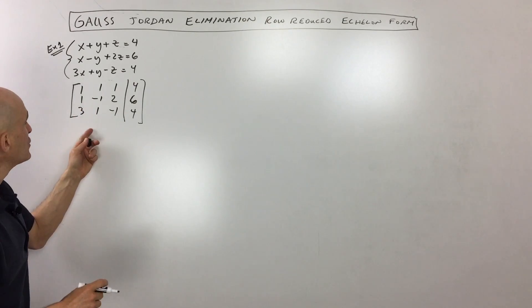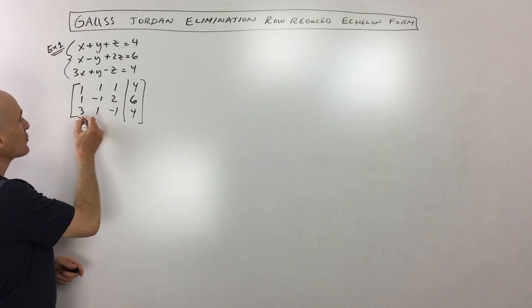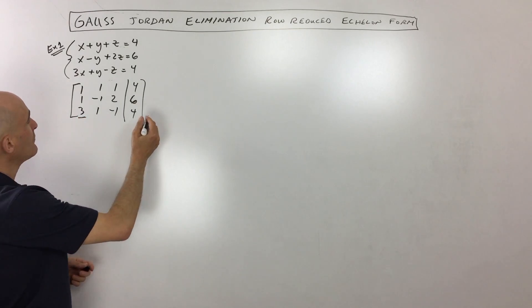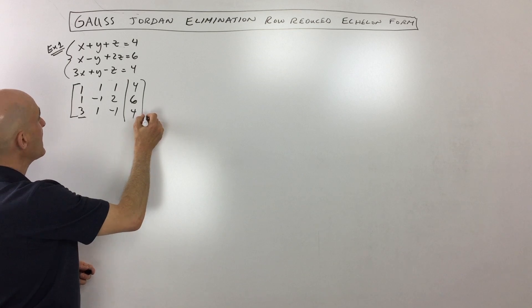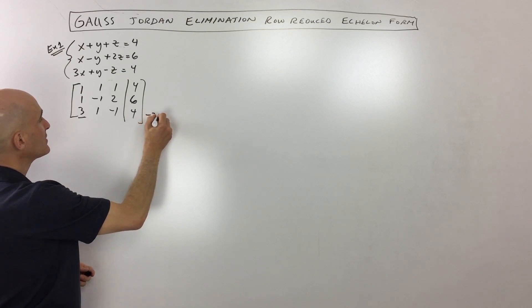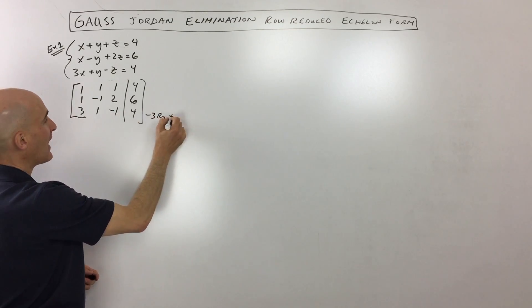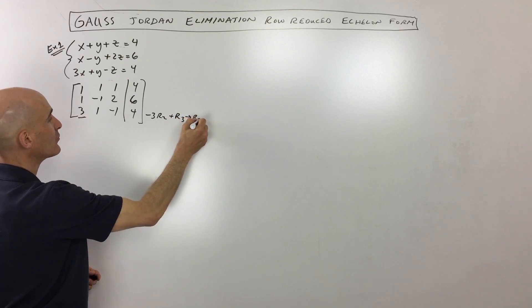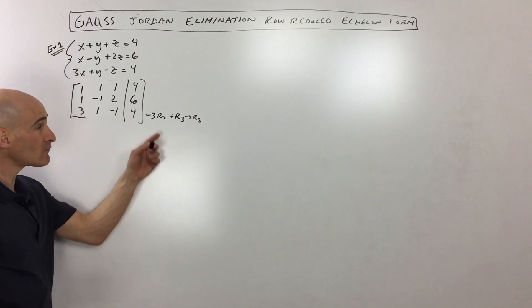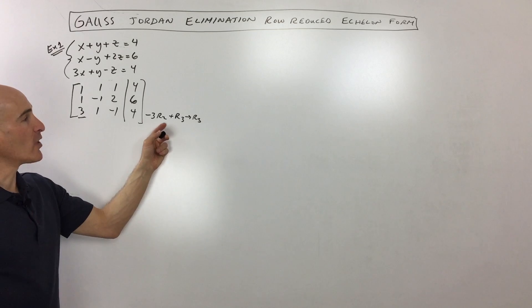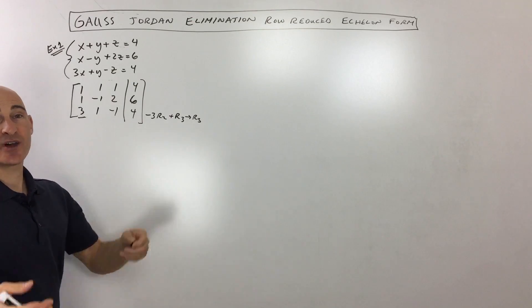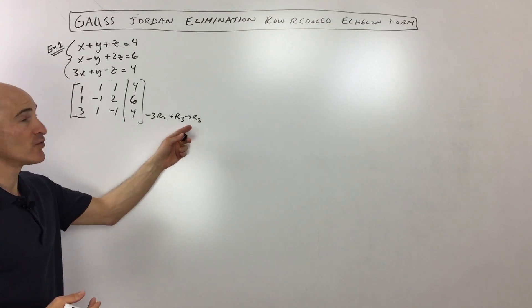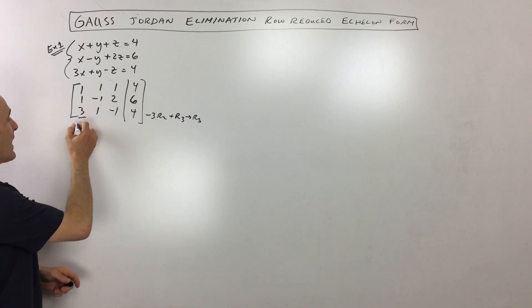So what we're going to do is start by trying to get zero in this lower left-hand corner. The way I'm going to do that is I'm going to multiply negative 3 times row 2 and add it to row 3, putting the answer in row 3. It's good to write down what you're doing in case you want to go back and check your work or review what you did.